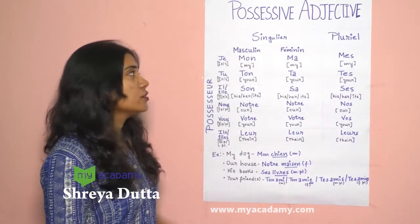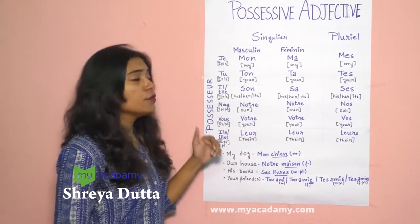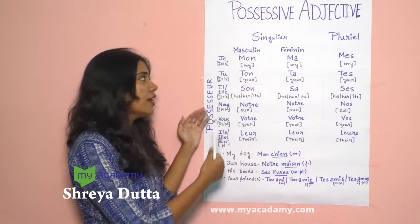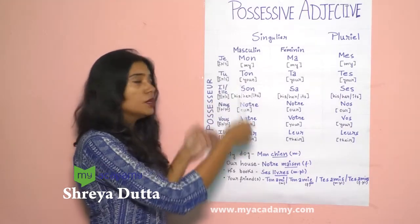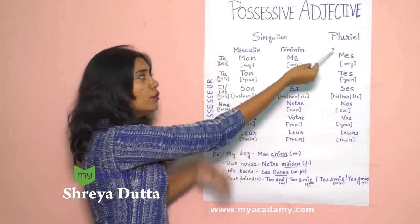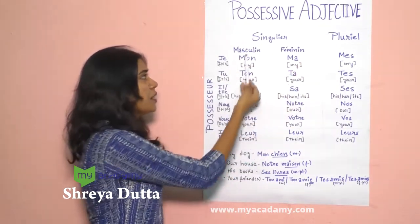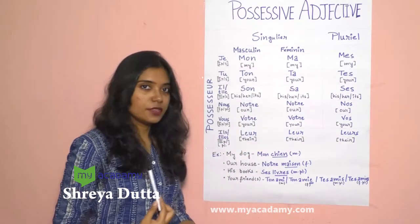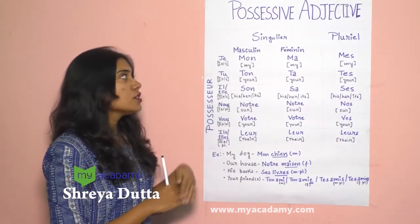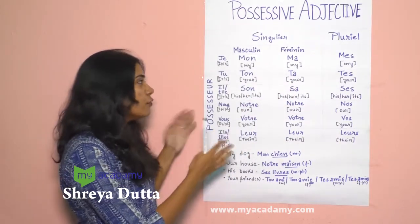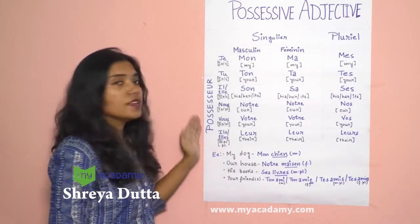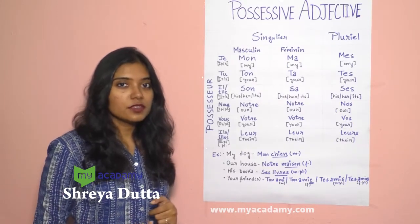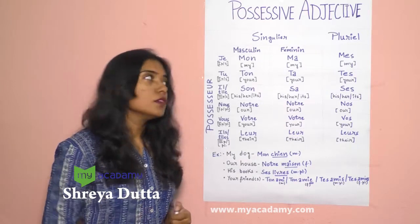Let's get started with adjective possessif. First, we can see some elements here like singulier, pluriel, masculine, feminine, and possesseur. So first, what is a possesseur? It refers to whom something possesses or belongs — that is, the subject pronoun.